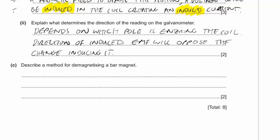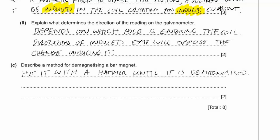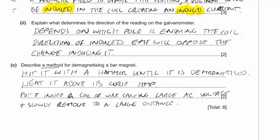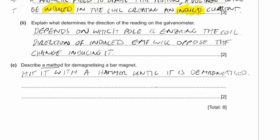Describe a method for demagnetising a bar magnet. Three possibilities: hit it with a hammer until demagnetised; heat it above its Curie temperature; or place it inside a coil of wire carrying a large AC current and slowly remove it to a large distance. Since only one method is required, the AC coil method is: place inside a coil carrying a large AC current and slowly remove to a large distance.